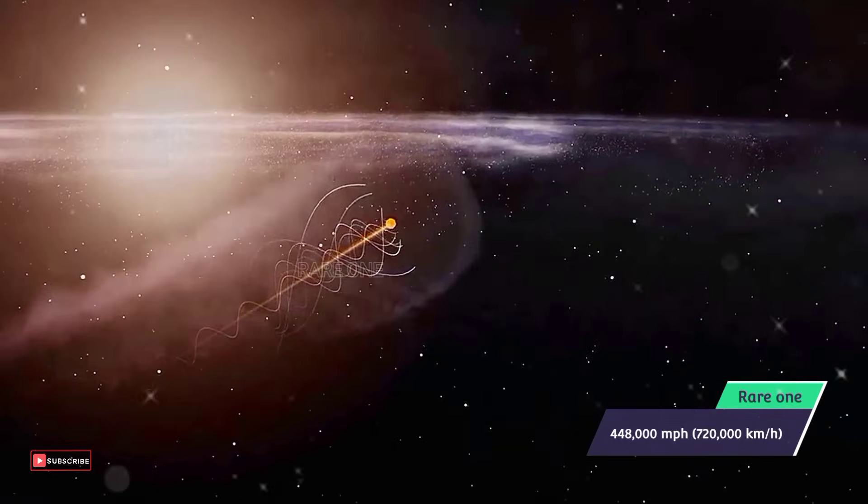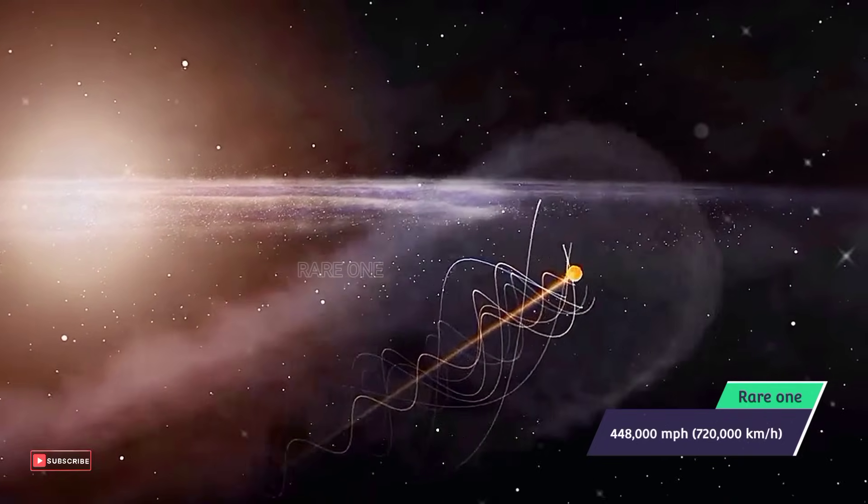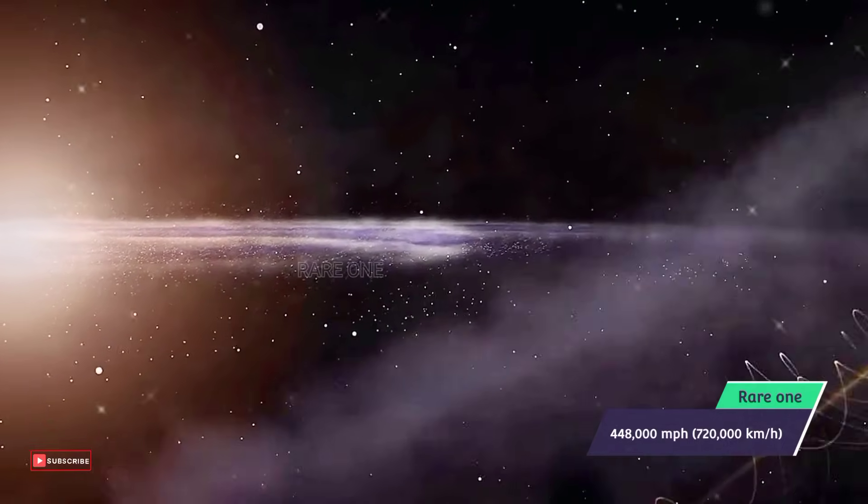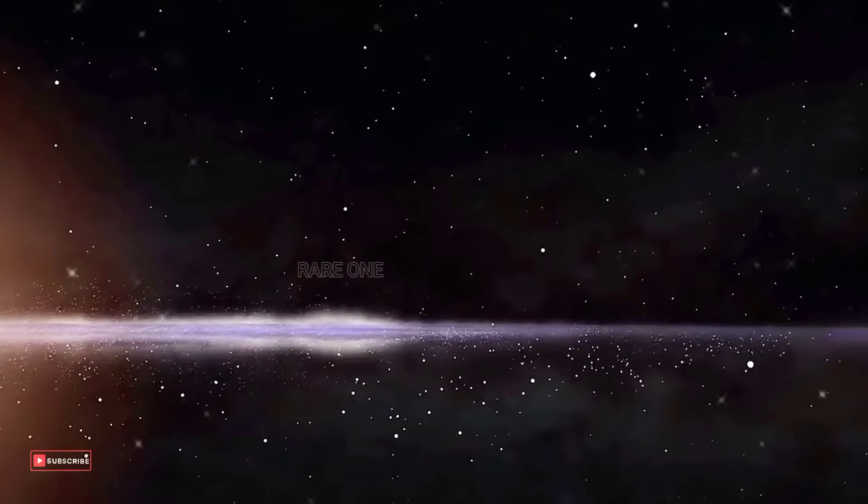At this moment, our Sun and the whole gang are hurtling through the Milky Way at about 448,000 miles per hour—720,000 kilometers per hour. Sounds fast, right?